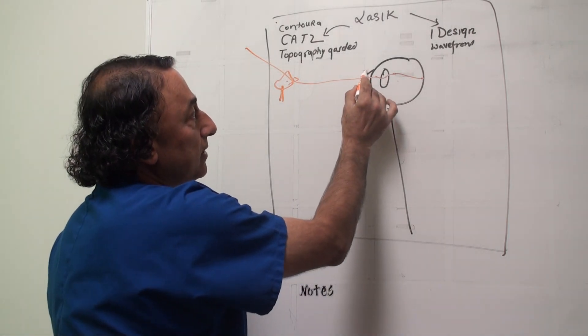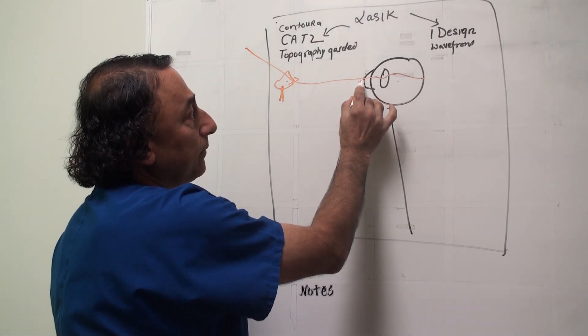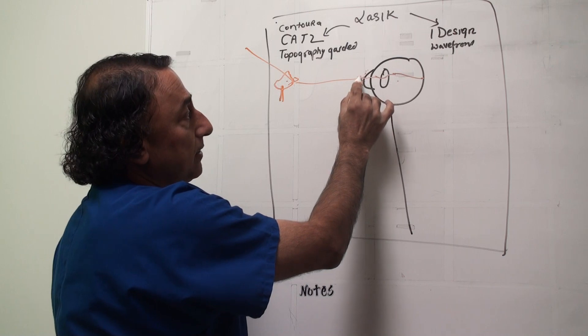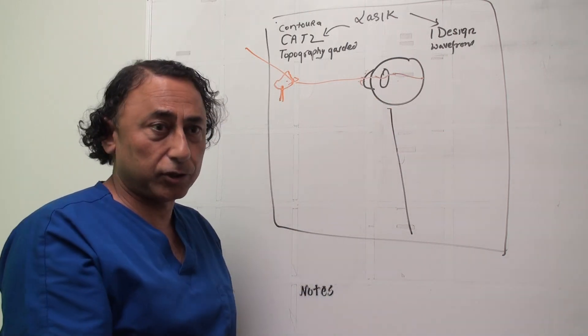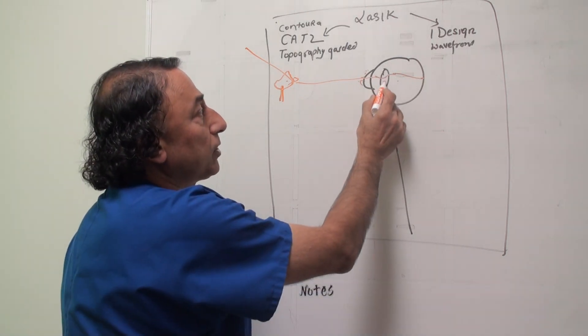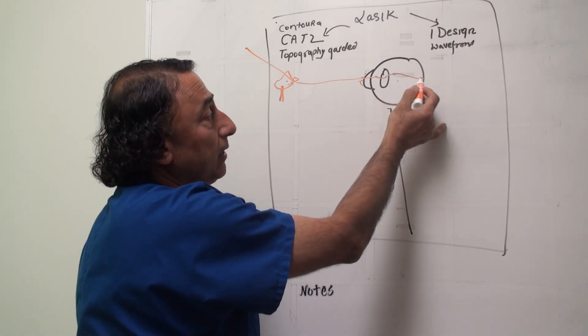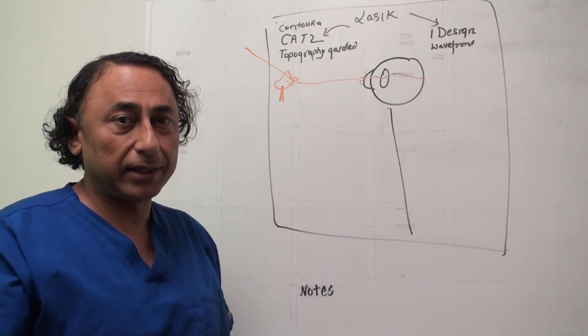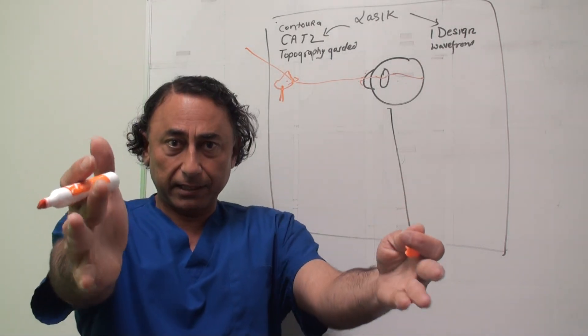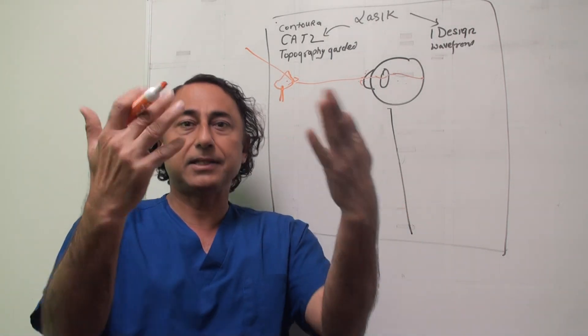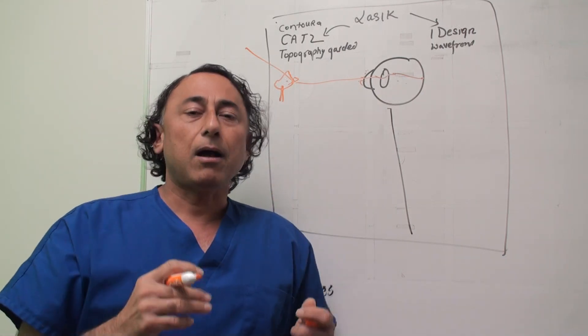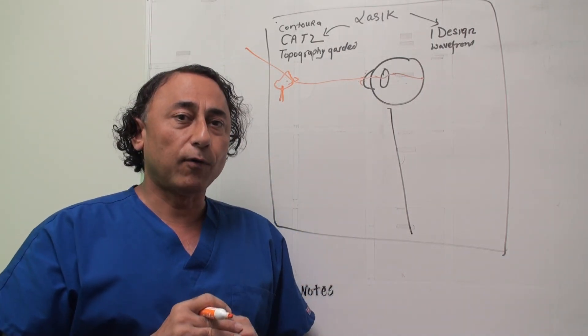At the tear-cornea interface occurs the maximum refraction. But refraction also occurs at the lens and then through the jelly, finally to the retina. When we're seeing something, like you're seeing me and I'm seeing the camera, the entire eye is involved.